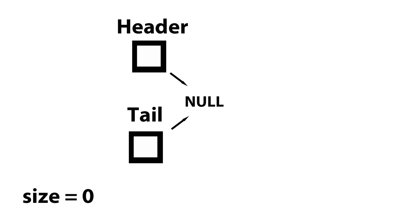Appending to our doubly linked list just means inserting the node at the end of the list. Now, there are two test cases: one is if the list is empty, and one if the list is not empty.